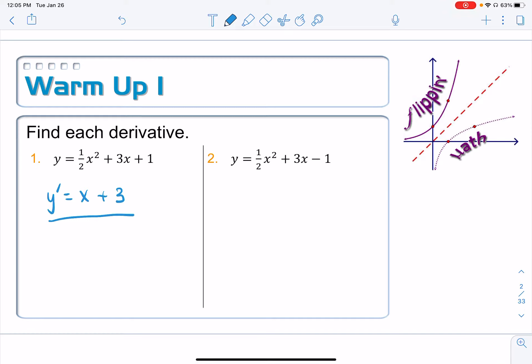If I look at number 2, Y' is equal to, well wait a minute, this is exactly the same. At least this part's the same and just have a different constant here. So it should still be x plus 3, and then that negative 1, its derivative, is also 0.